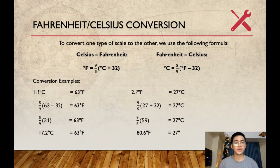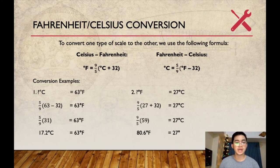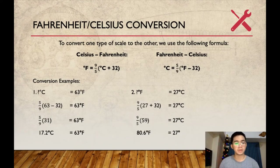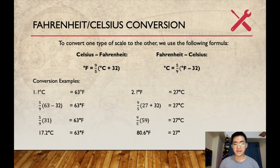If Celsius is given and you wish to convert it to Fahrenheit, the computation will be 9/5 multiplied by the sum of the given Celsius and 32. If Fahrenheit is given and you wish to convert it to Celsius, the computation will be 5/9 multiplied by the difference of the given Fahrenheit and 32. For example number 1: the given is 63°F. To convert, perform the formula 5/9 multiplied by (63 − 32), and you get an answer of 17.2°C. For example number 2: the given is 27°C. To convert it to Fahrenheit, perform the formula 9/5 multiplied by (27 + 32), and you get an answer of 80.6°F.